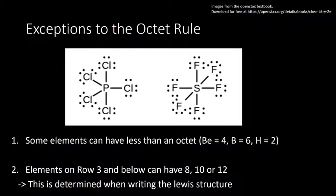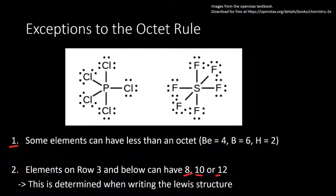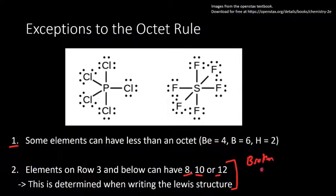The exceptions to the octet rule can also go bigger than an octet. We've covered the first type, where elements can have less than an octet. The other case is where elements have more than an octet — they can have 8, 10, or 12. This happens for elements on row 3 of the periodic table and below. You decide if they want 8, 10, or 12 just by drawing the structure and seeing how many you need to add. When you break the octet rule, it's going to be broken on the central atom — the central atom is the one that takes on the extra electrons.